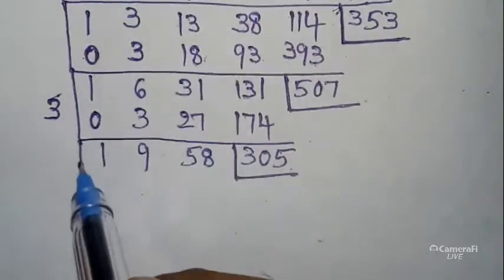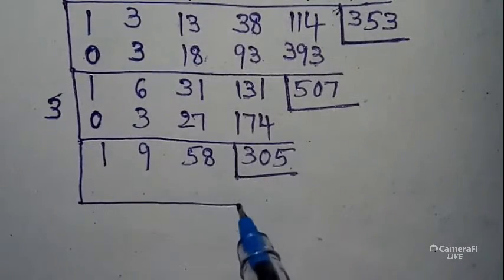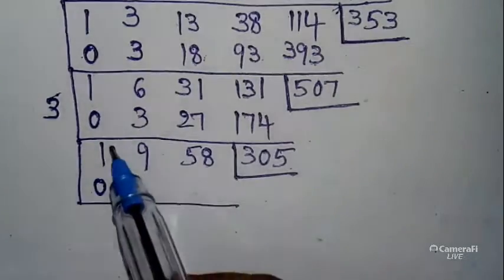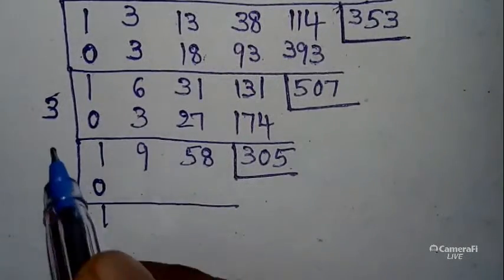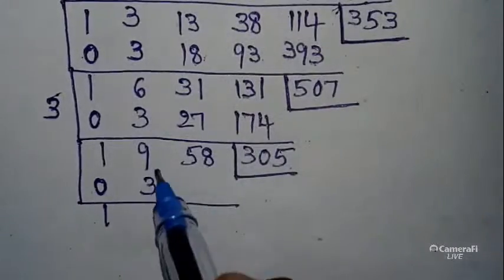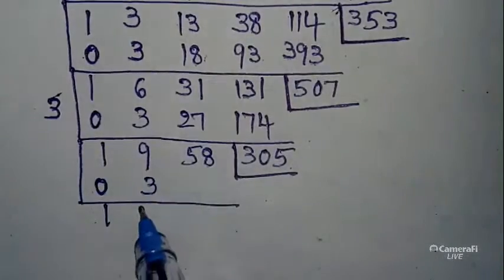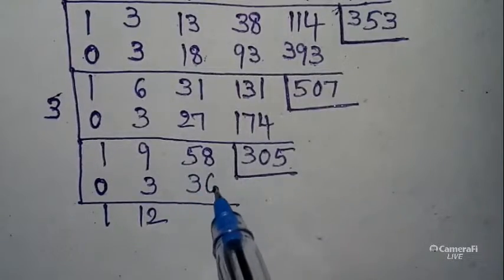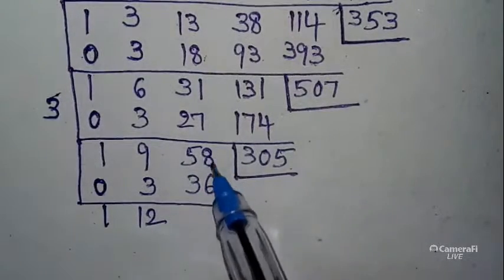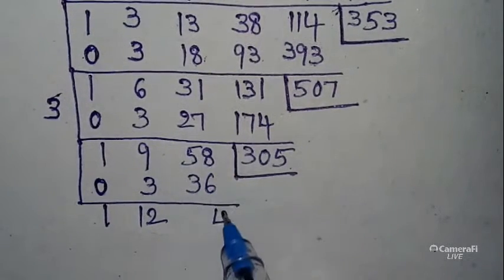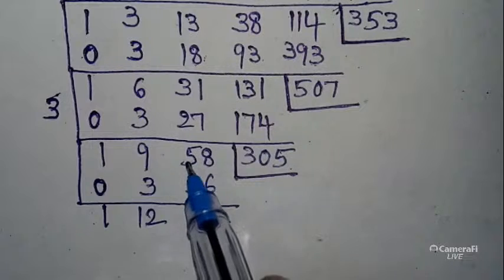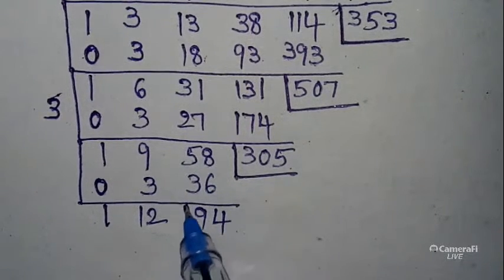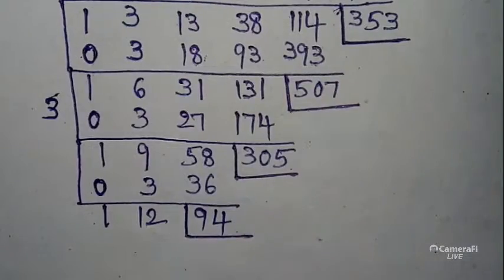Take one more box. First value write 0. 1 + 0 = 1. Cross multiply: 1 × 3 = 3. 9 + 3 = 12. Cross multiply: 12 × 3 = 36. Addition: 8 + 6 = 14. Simplifying gives the value 94. Write this value down.